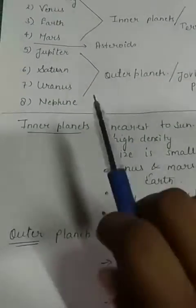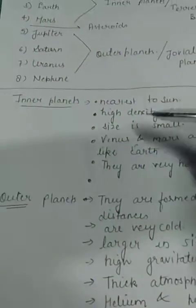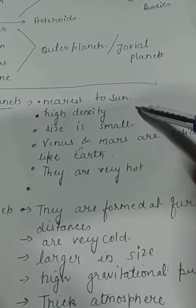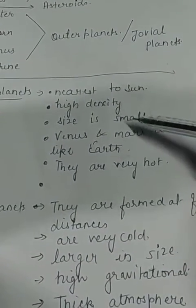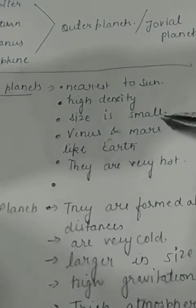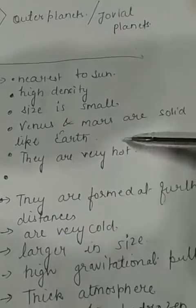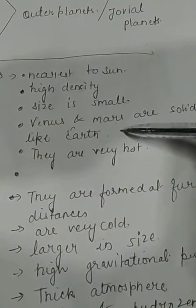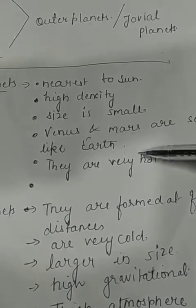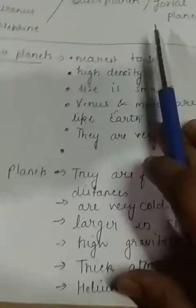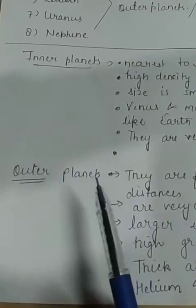Now let's understand the qualities of inner and outer planets. Inner planets are nearest to the sun and have high density. The size of these planets is very small compared to the outer planets. Venus and Mars are solid like Earth, and these planets are very hot because they are nearest to the sun.